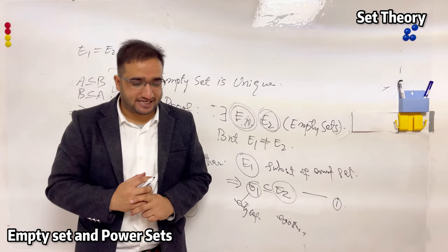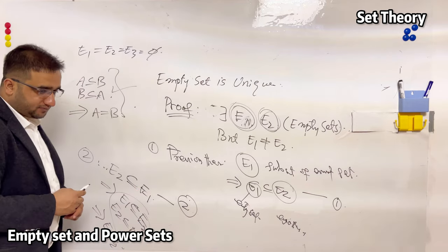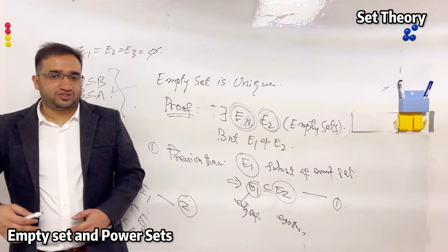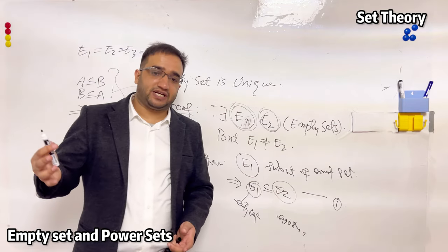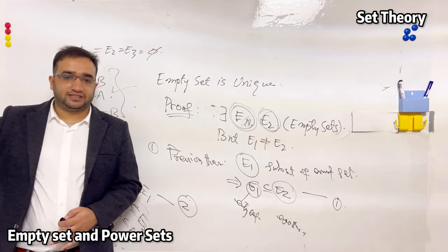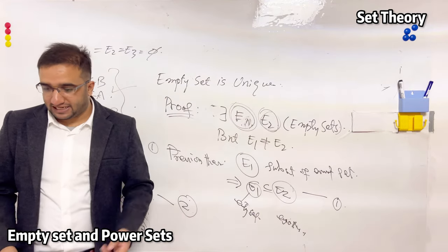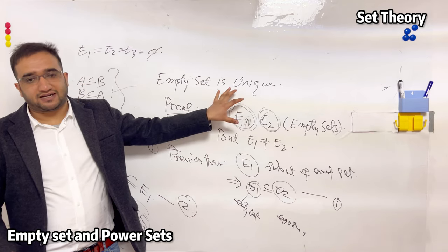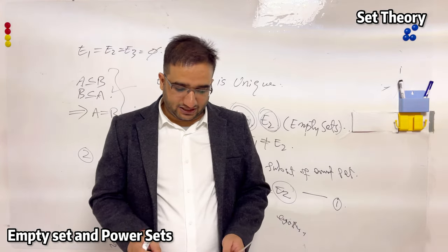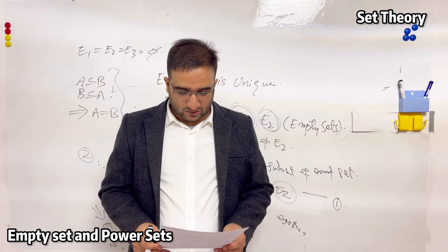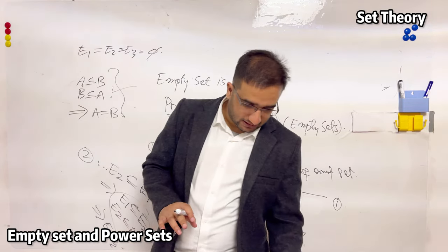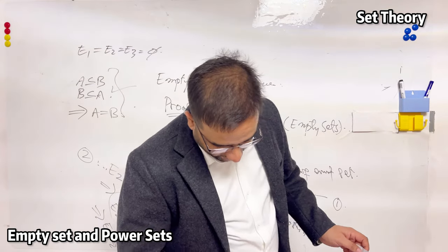To disprove any set property — for example, that A union B intersection A is a subset of A — you just need to find one single example, known as a counter example. Even if a theorem took 20 pages to prove, one counter example is enough to disprove it. This method applies in set theory as well.